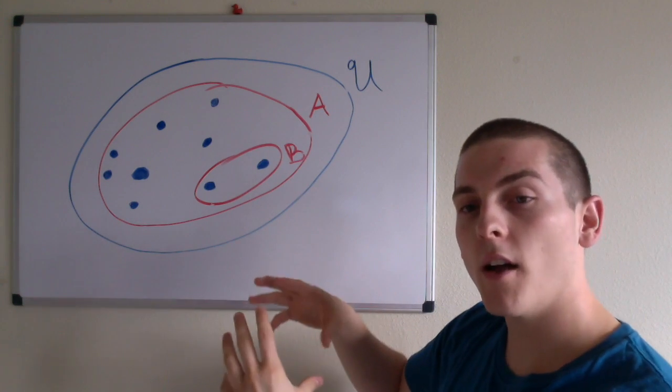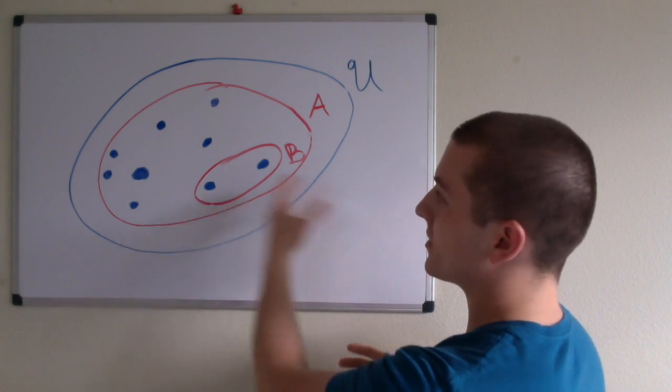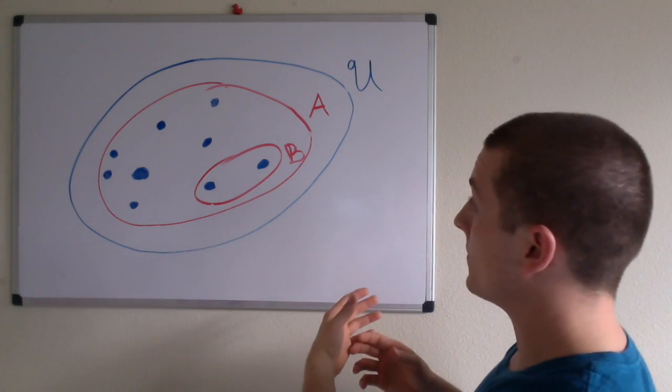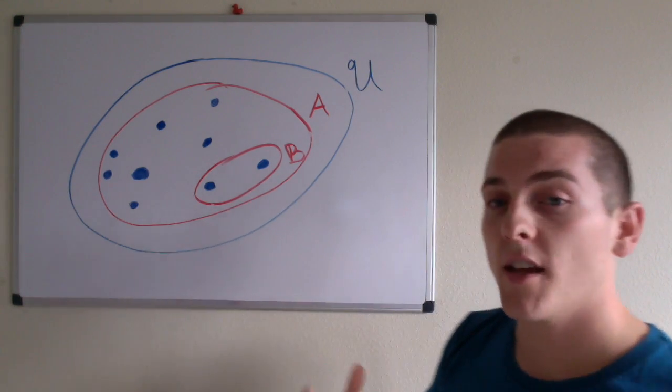So U contains all elements of A, however, U does not contain any extra elements. So U is a subset of A and A is actually a subset of U. U is a superset of A and A is also a superset of U. So the sets A and U in this case are actually equal.